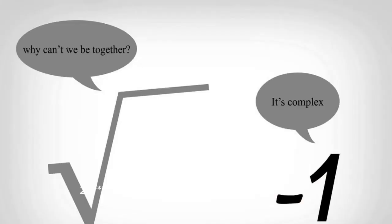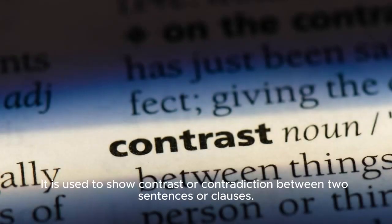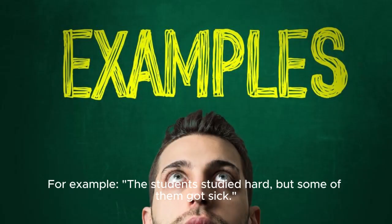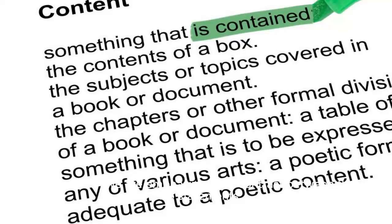Two: 'but' is another important conjunction. It is used to show contrast or contradiction between two sentences or clauses. For example, the students studied hard, but some of them got sick. In this sentence, we are stating that the students studied hard, but then we contradict this by saying that some of them got sick. Using 'but', we are emphasizing the contrast between the two statements.